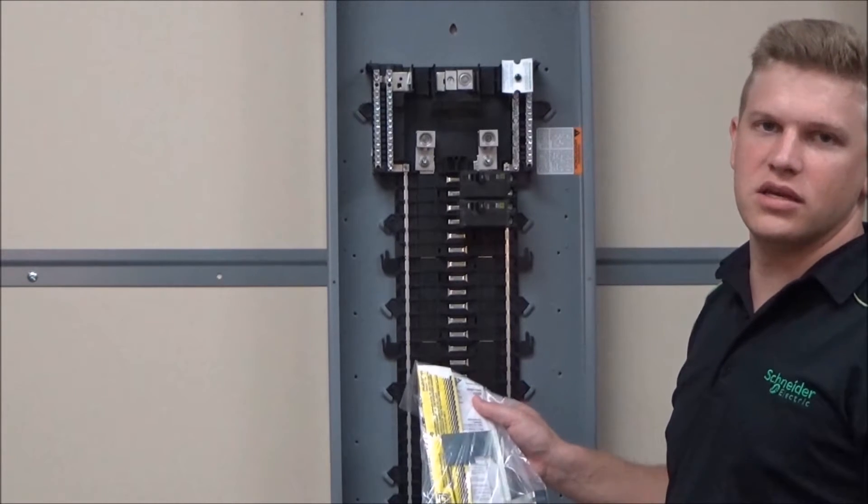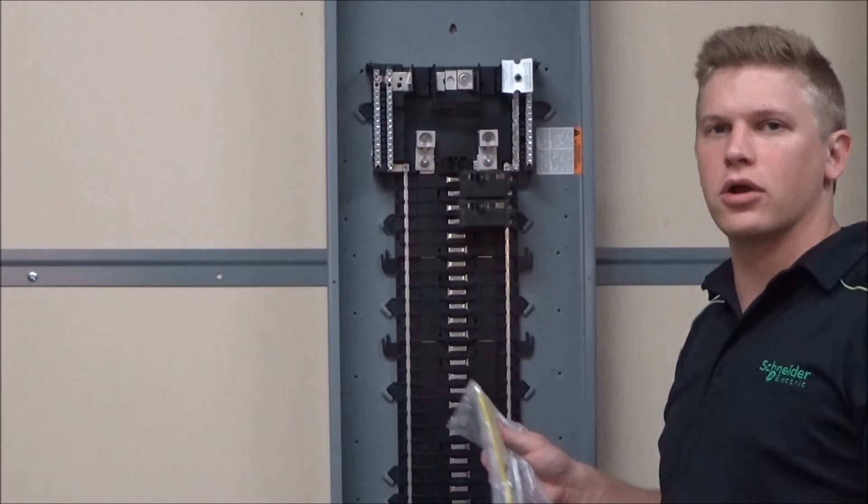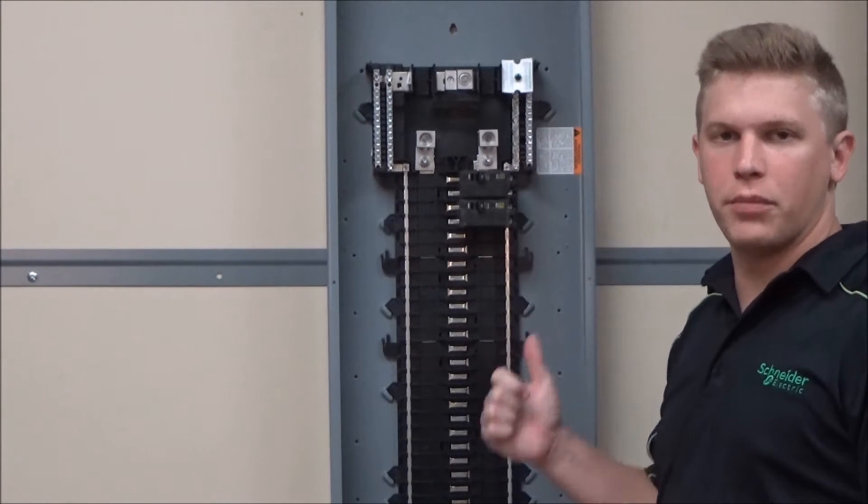The manual transfer kit is for transferring between generator and utility power when using a branch back-fed main for both.